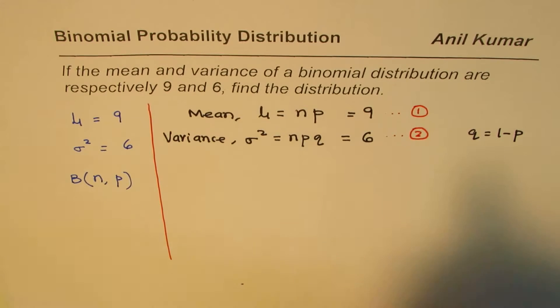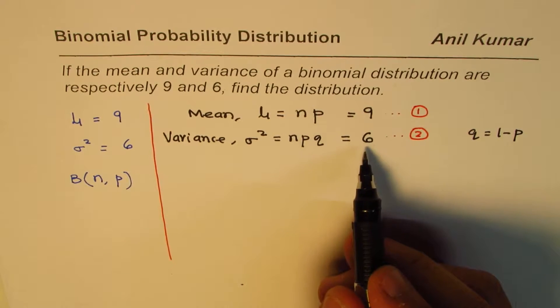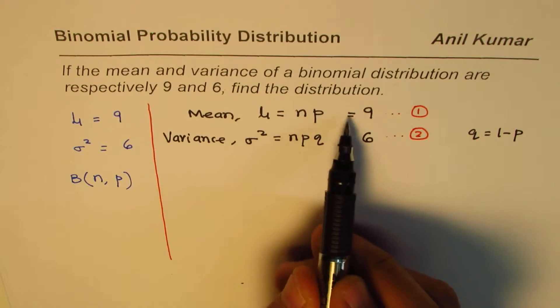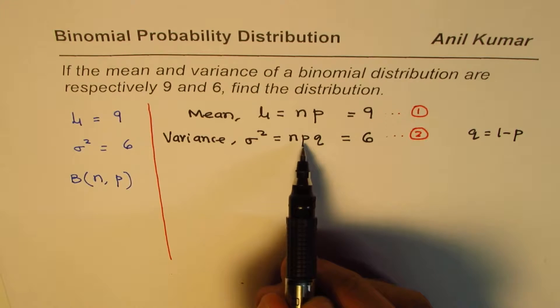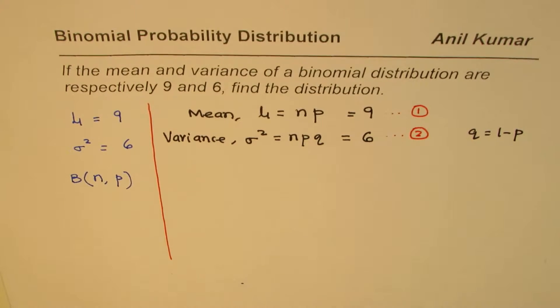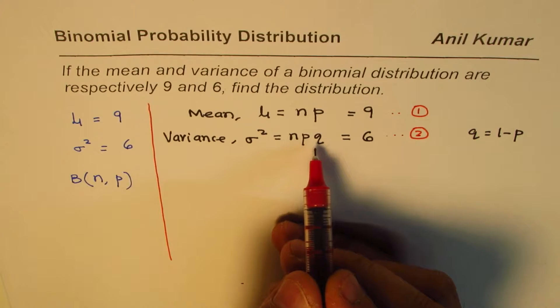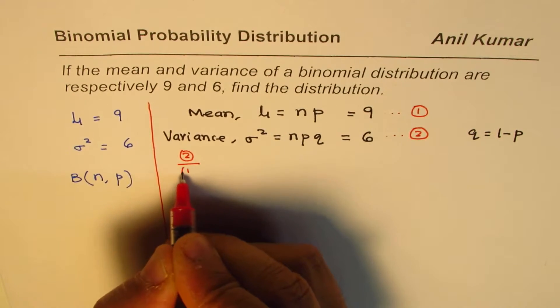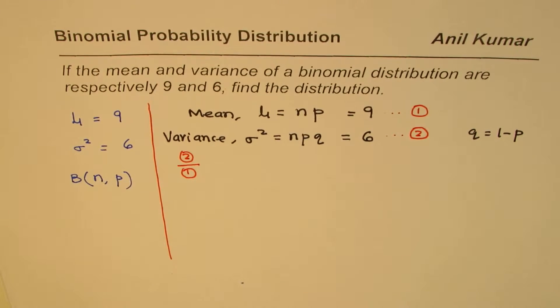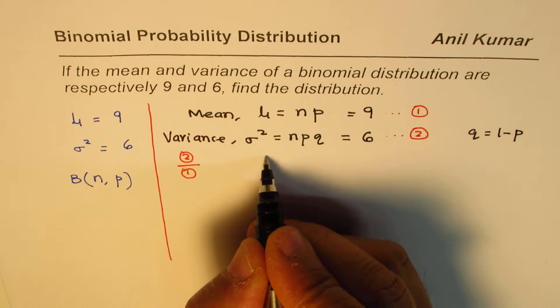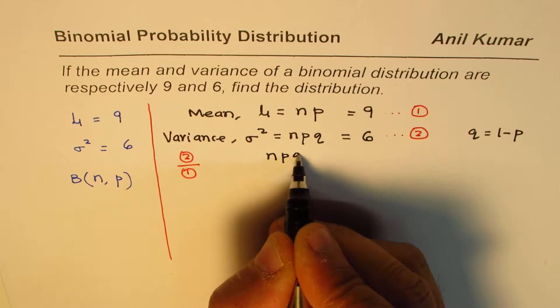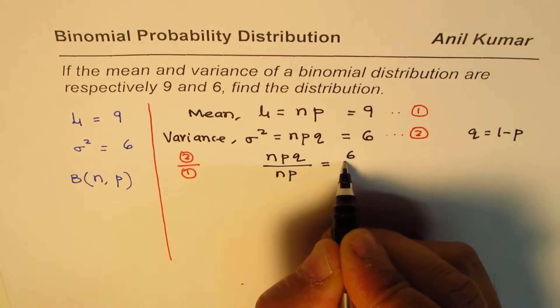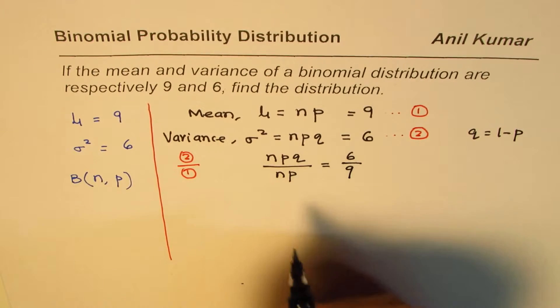With two equations and two unknowns, we can always calculate. The first equation is np = 9, the other is npq = 6. We can find the value of q if I divide equation 2 by equation 1. On the left side we get npq divided by np, which equals 6 over 9.